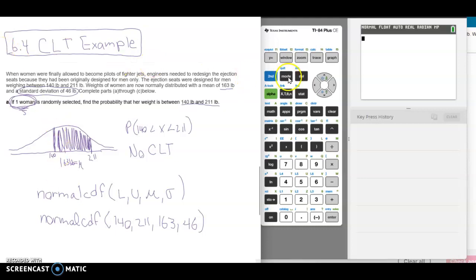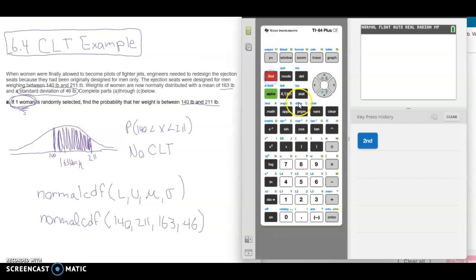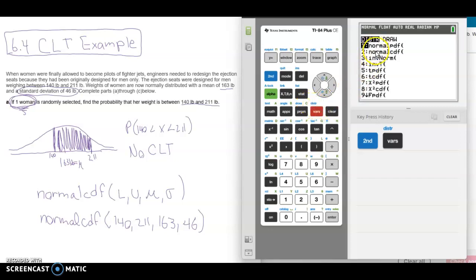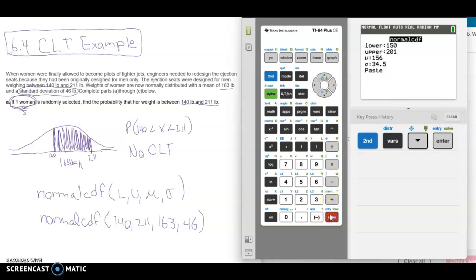Now we can put that in our calculator. So you can see on the right side of the screen, I have my calculator, it should look just like yours, and I'm going to press second, vars. And the reason I do that is because second lets me access these blue writing up here, and we're talking about distributions. So I'm getting to the distribution section. And I'm going to go to normal CDF, you can either scroll down and press enter, or you can just press the number to make sure it's CDF and not PDF.